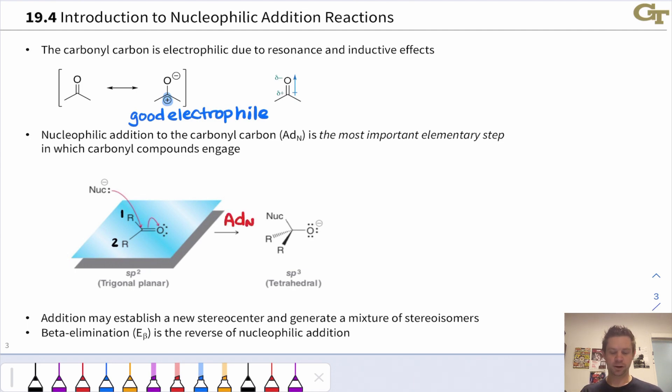One thing to note is that this establishes a new tetrahedral center. The carbonyl carbon, which was trigonal planar in the starting material, becomes tetrahedral in the product. There's the potential here for a stereocenter to be created when these two R groups are not the same in the starting carbonyl compound. When these are not the same and the nucleophile is not the same as either of those groups, we end up with a stereocenter.